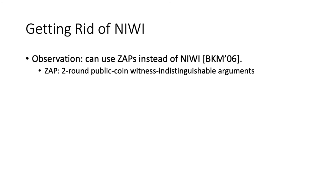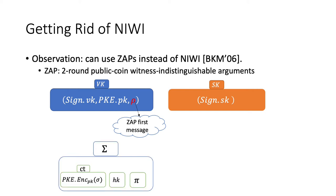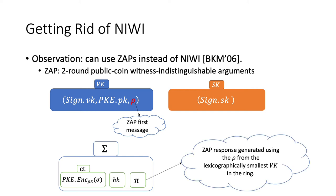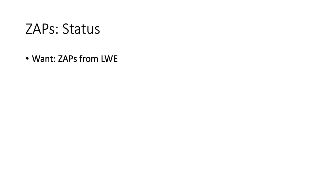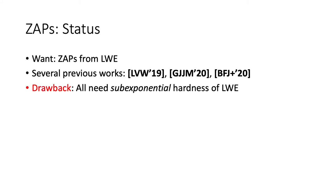Now that we have summarized the BDHKS construction, let us see how we can replace the NIWI proof. We begin by using an observation from Bender, Katz, and Morselli, where instead of using a NIWI, we try to use a specific two-round WI argument, or zap, which has a public coin first message. Instead of using the NIWI, we place the zap first round message in the public key VK, and use the second round response in place of the NIWI proof in the ring signature to prove our statement. This seems to work, except that using the first message from the signer's own verification key may violate anonymity trivially, so instead we use the first message from the lexicographically smallest verification key in the ring. It seems now that we would essentially be done if we could build zaps from LWE. And in fact, there is a rich and recent line of works that construct zaps just from LWE. However, all of these works crucially require sub-exponential hardness from the LWE assumption, specifically to show soundness, where these works all utilize some form of complexity leveraging type techniques.